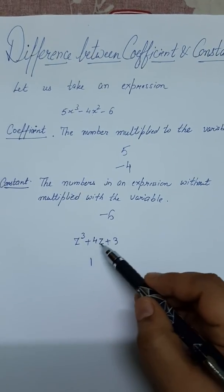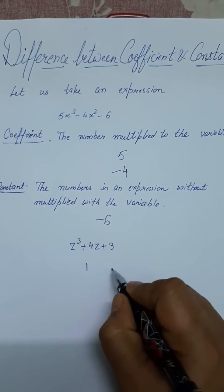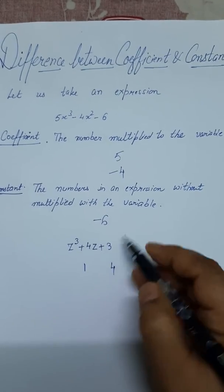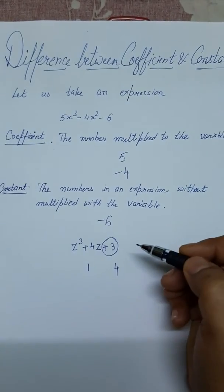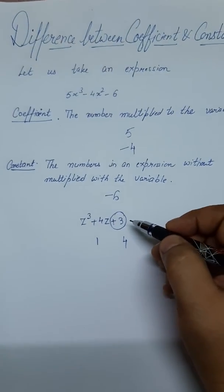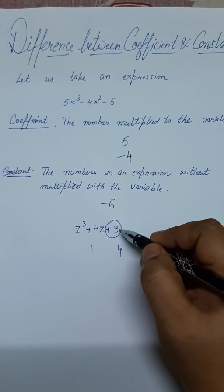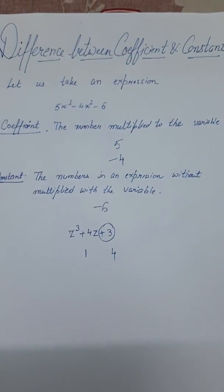And the coefficient of z is 4. The constant number will be 3 only. 3 will be the constant number because 3 is not attached to any variable.